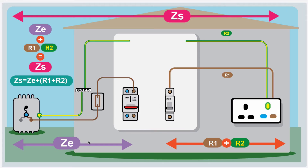It's important to understand the relationship of ZE to the rest of the installation. ZE is the external part. We also have the internal part of the property — your fuse board and all your current-using equipment — and this is measured with R1 plus R2. R1 is your line conductor going to your protective device into the plug socket, and R2 is your CPC going back to the fuse board. So ZE is external, R1 plus R2 is internal, and when you combine them both you get ZS — your earth fault loop impedance for the entire installation. The formula is: ZS = ZE + R1 + R2.